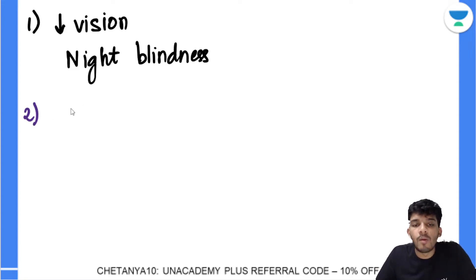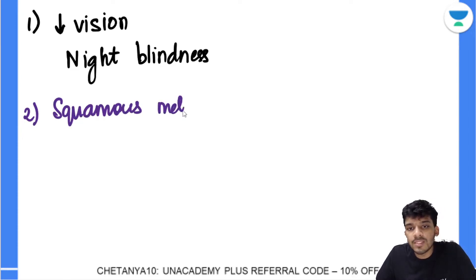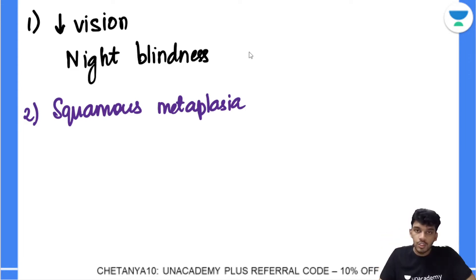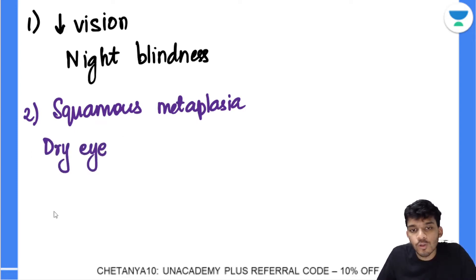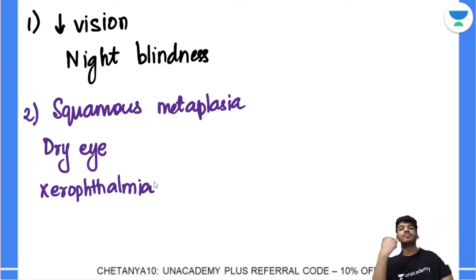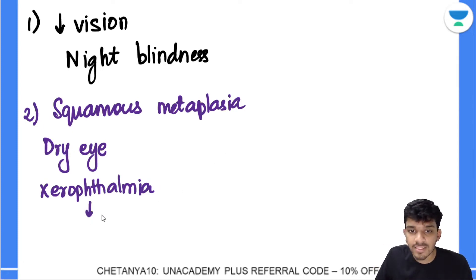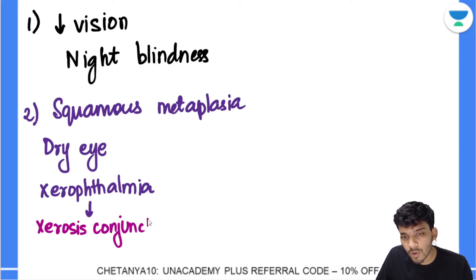Vitamin A also has a role in preventing squamous metaplasia. In the eyes, the lacrimal apparatus secretes mucus for lubrication. When squamous metaplasia occurs, the mucus-secreting epithelium converts to squamous epithelium, stopping mucus and lacrimal secretions. This causes dry eye, also called xerophthalmia, and the first sign is xerosis conjunctivae — dryness of the conjunctiva.